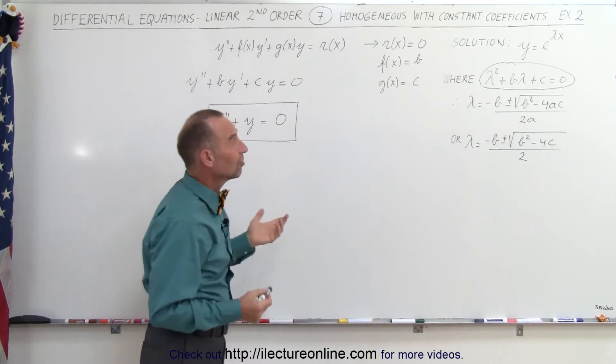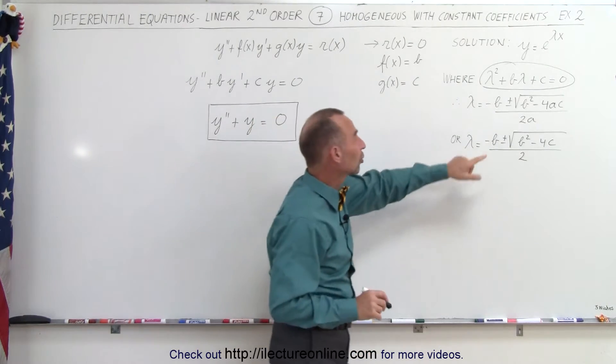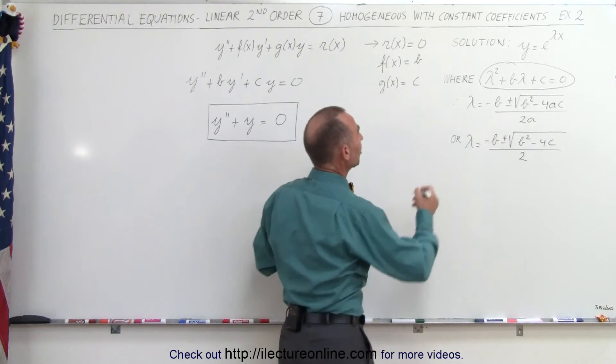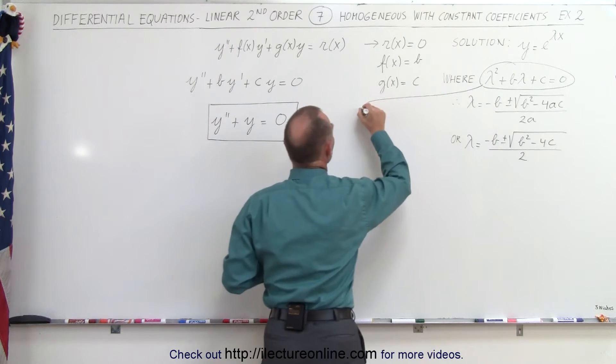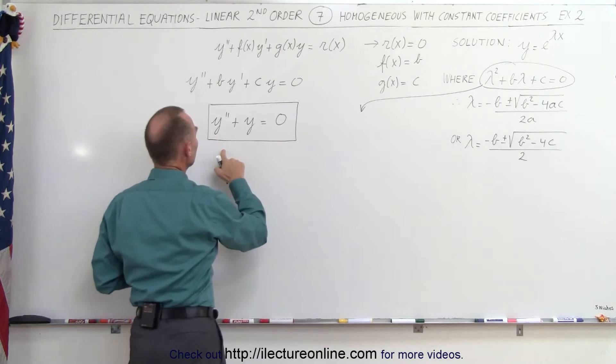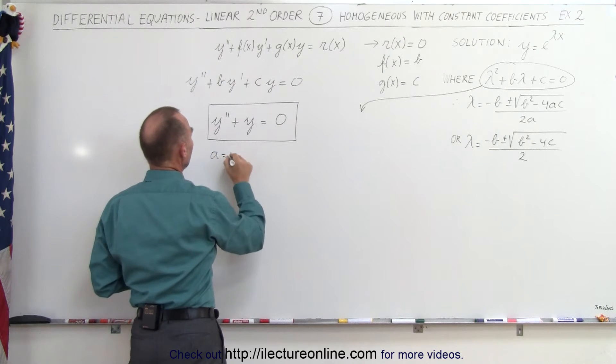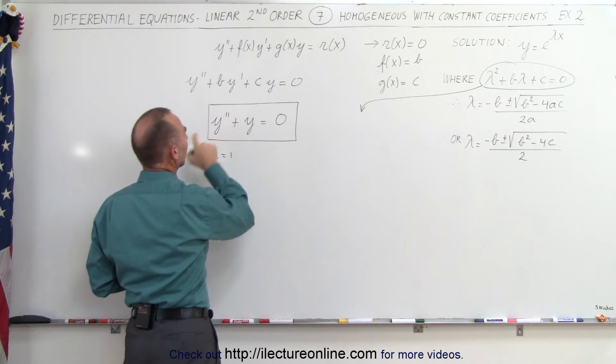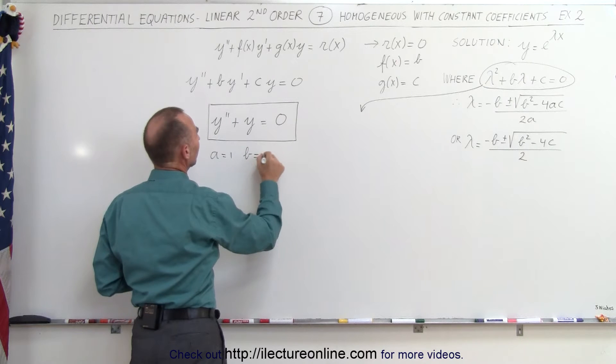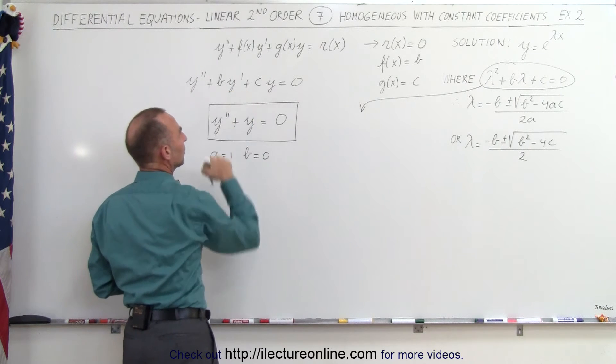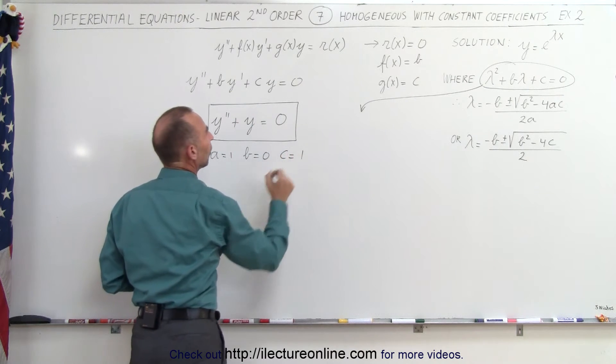We can also take this equation and say, well, maybe we don't need to use the quadratic formula. Maybe we can just simply look at it like this. We know that in this equation, a would be equal to one, because that's the coefficient in front of y double prime, b is equal to zero, because we're missing the middle term, we're missing the y prime term, and c is equal to one.